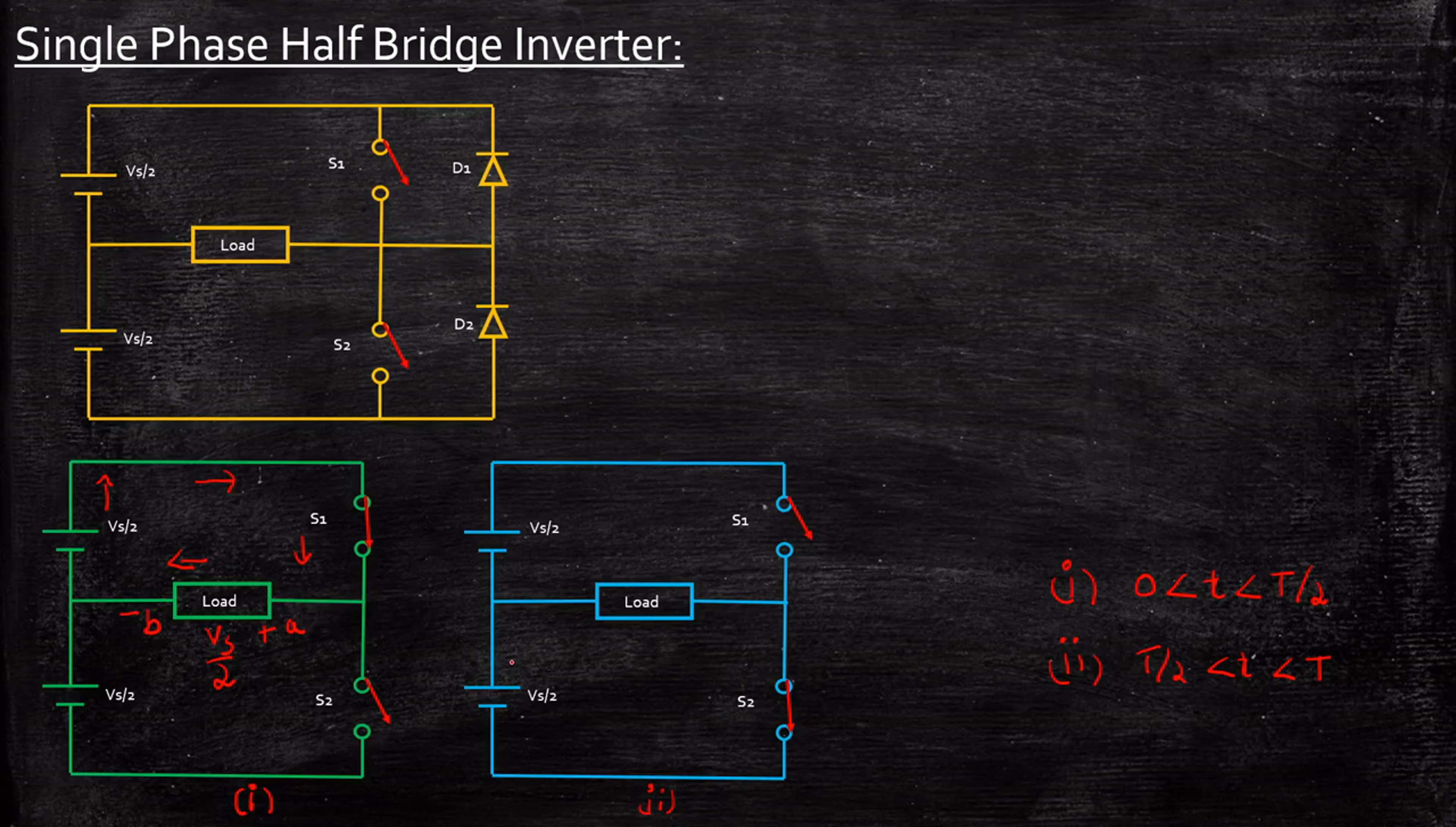As a result, S1 is acting as a short circuit. Current will start flowing through this path, through this path, and return here. So now the direction of current is in this orientation, with plus and minus with respect to A and B.